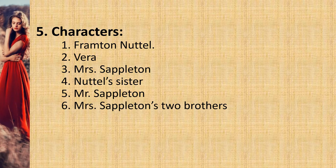Mrs. Seppleton is Vera's aunt and a friend of Nattel's sister. She is absent in the first half of the story. Nattel's sister is a silent character in the story; she lived in the area Nattel moved to four years before. Mr. Seppleton is the husband of Mrs. Seppleton, who has gone hunting for the day. Mrs. Seppleton's two brothers have also gone hunting for the day with Mr. Seppleton. One of them, whose name is Ronnie, often teases Mrs. Seppleton by singing a short song.